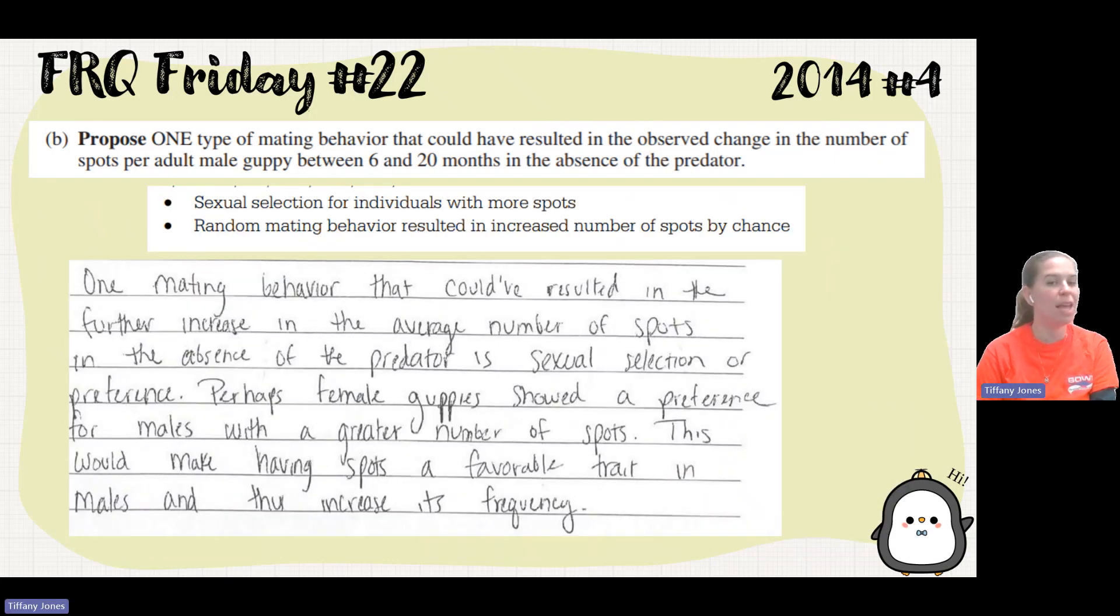So the student says one mating behavior that could result in the further increase in the average number of spots in the absence of the predator is sexual selection or preference. Perhaps female guppies showed a preference for males with a greater number of spots. This would make having spots a favorable trait in males and thus increase its frequency.